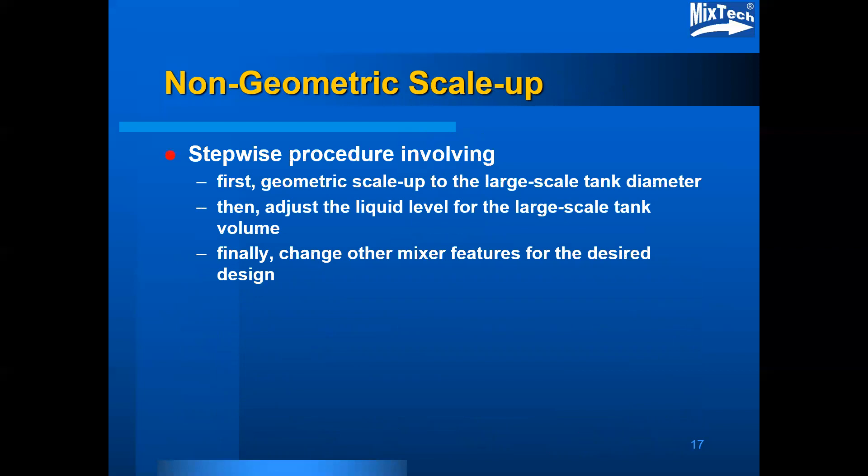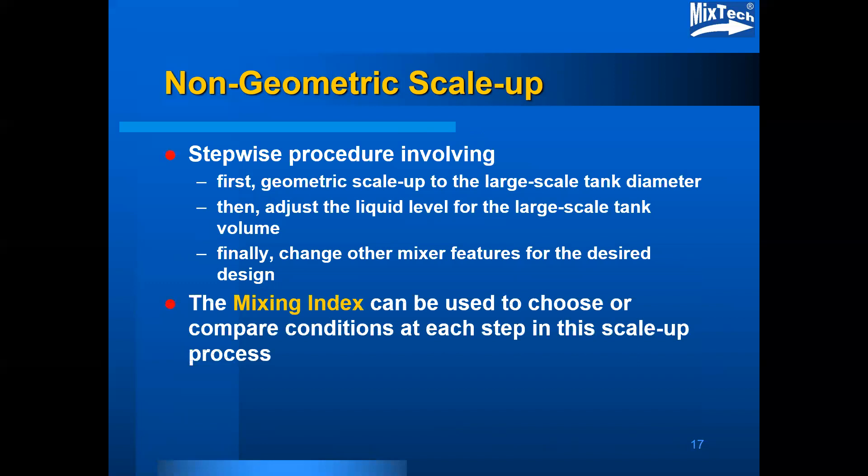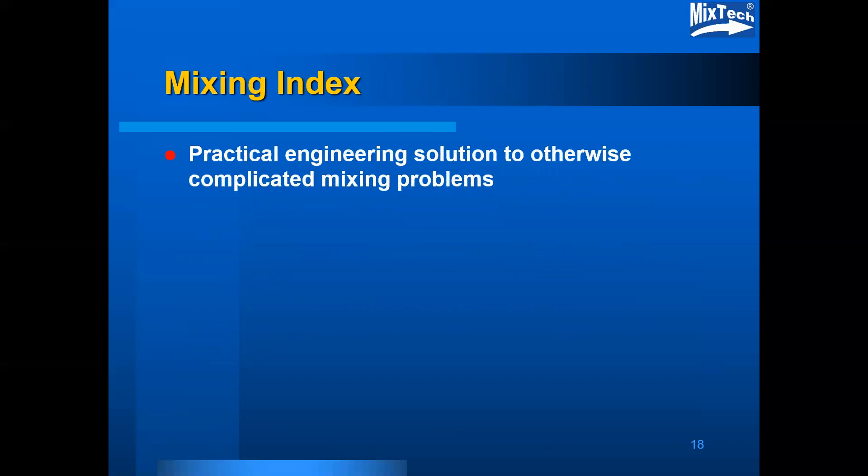For non-geometric scale-up, a stepwise procedure is typically used: first with a geometric scale-up to the large scale tank diameter, then adjusting the liquid level by changing the volume for the large scale tank, and finally changing other mixer features for a desired design such as number of impellers, impeller type, and impeller locations. The interesting advantage here is that the mixing index can be used to choose or compare conditions at each step in the scale-up process, giving some quantitative impact on what is actually being chosen.